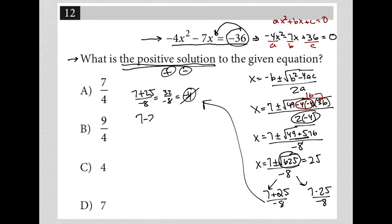So the other solution must be the negative one. 7 minus 25 over negative 8, which would equal negative 18 over negative 8. And of course, negative divided by negative makes these positives, and then this reduces down to 9 over 4. So the answer must be choice B.